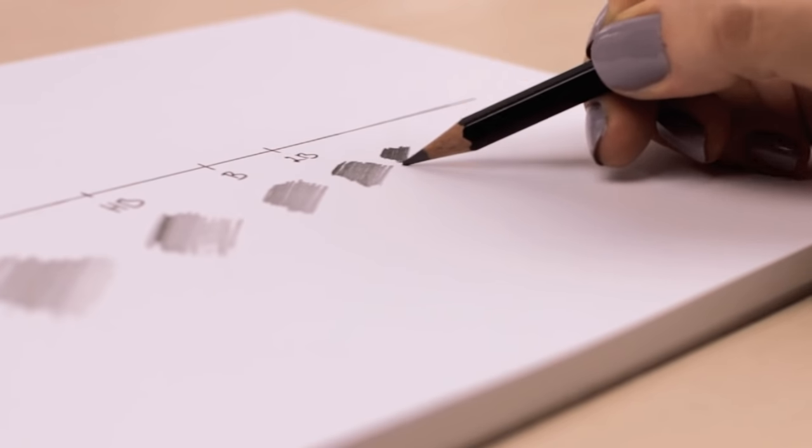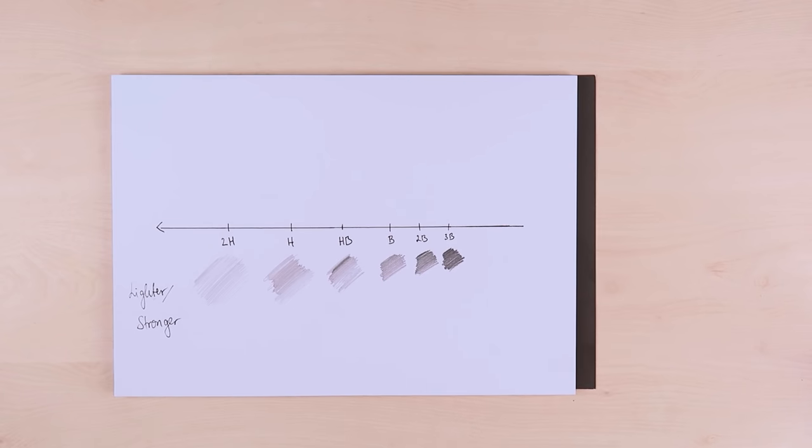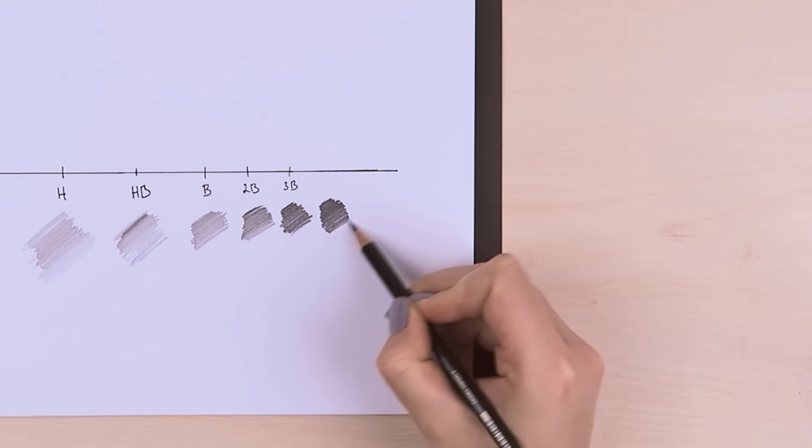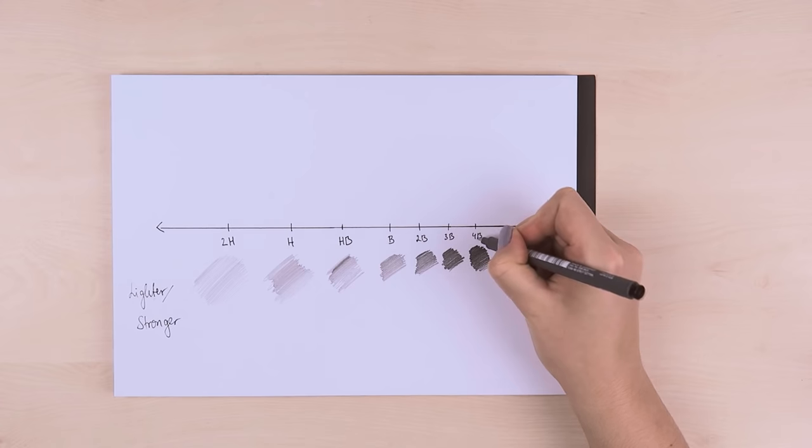B pencils are usually used for sketching lines that are more blurry and smudged. And also, of course, for shading because, as I said earlier, they're softer and you can blend them.